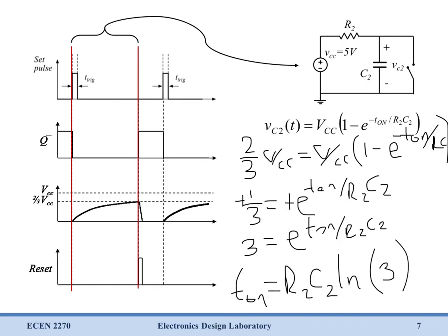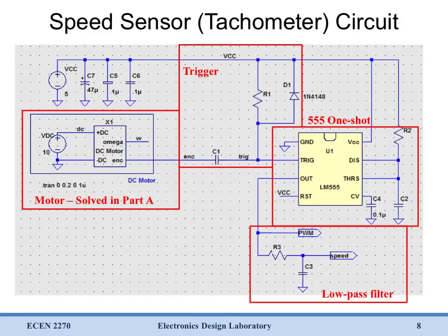Remember we need t on to be about 90% or so of our minimum encoder period, which happens at our maximum encoder frequency. Once we've solved for R2C2 in that fashion, we now know how to select every component value seen here. Remember R1C1 were selected to ensure that our trigger pulse was 1 to 10 microseconds, something in that range. We then select R2C2 in order to ensure that our one-shot outputs a pulse of about 90% of our minimum encoder period.